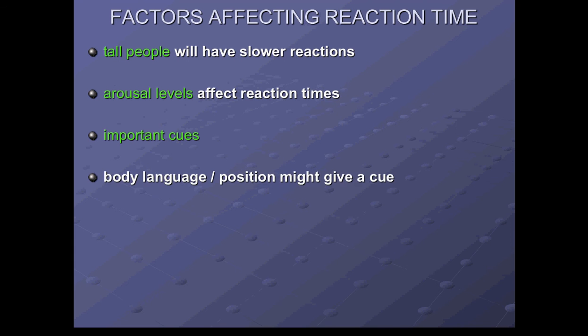There are also factors like body language and position. They might give a cue, which enables the performer to anticipate a stimulus. Anticipation of an opponent's play by identifying favourite strokes or positions, particularly if the play involves an attempted dummy or a fake. So anticipation can lead us to say increase reaction time, rather than many of the factors we've mentioned, which would decrease.